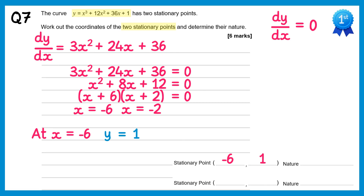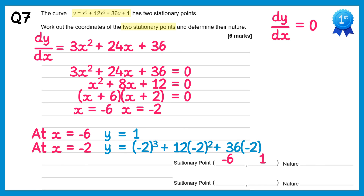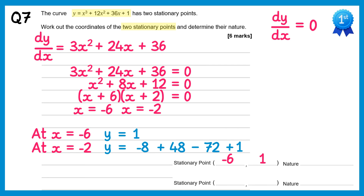At x equals negative 2: y = (−2)³ + 12(−2)² + 36(−2) + 1 = −8 + 48 − 72 + 1 = −31. So the coordinates of the other stationary point are (−2, −31).